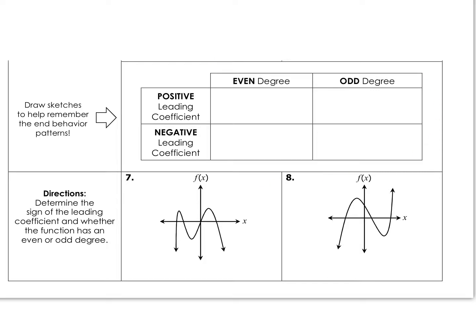Looking at the patterns: if it's an even degree with a positive leading coefficient, both ends go up. If it's a positive leading coefficient and odd degree, the right end goes up and the left end goes down. When the leading coefficient is negative and even degree, they both go down — even degrees always go in the same direction. When the leading coefficient is negative and the degree is odd, it does the opposite of the parent function. Understanding the direction of the parent cubic is really important because when the leading coefficient is negative, it reflects.